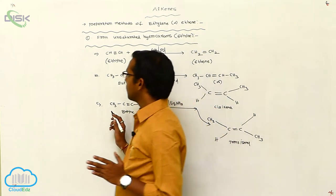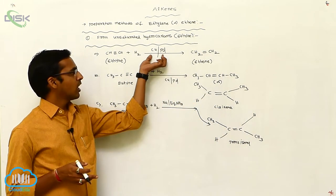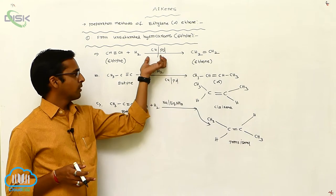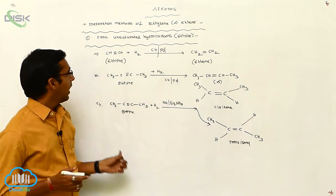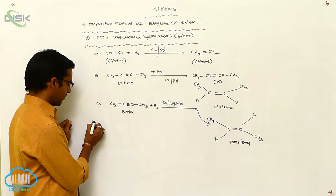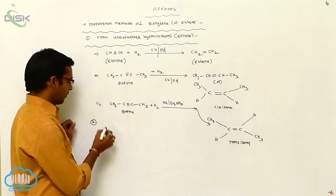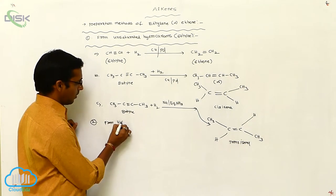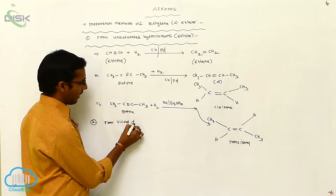So, in summary, addition of hydrogen in the presence of copper metal, palladium metal, or sodium in liquid ammonia converts the triple bond to a double bond. The second method is from vicinal dihalides.